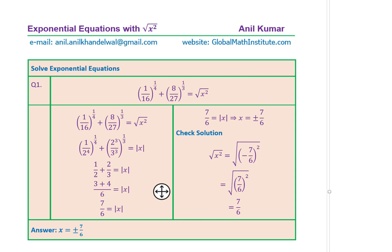Let's see how to solve it. Begin by writing them as exponents of the base with the fourth power and the third power. So one over 16 can be written as one over 2 to the power of 4. We have a power of one over four, so one over four times 2 to the power of 4 gives you one half. That is the concept of solving exponential equations with rational exponents.